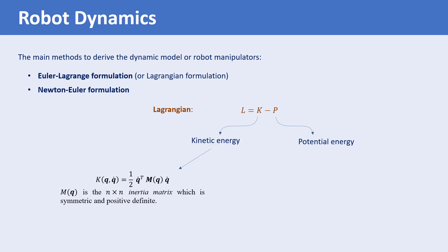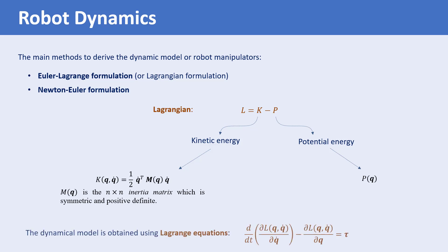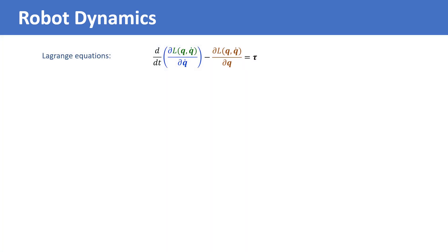The potential energy is only a function of q and is independent of q-dot. We denote the potential energy by p of q. We then obtain the dynamical model of the system using Lagrangian equations. The Lagrangian is a function of q and q-dot and is equal to one-half q-dot transpose times m of q times q-dot, minus p of q.